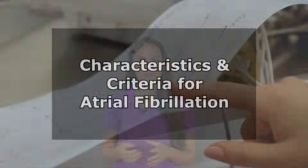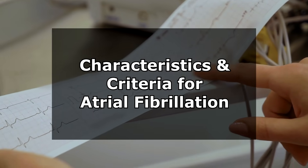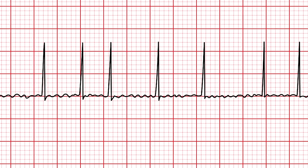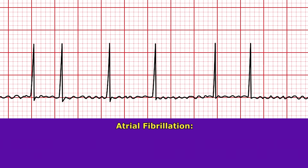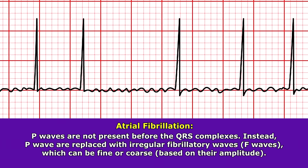How can you tell that your patient is in AFib? Let's look at the criteria and characteristics for this rhythm. When you look at the ECG waveform, you're going to see that P waves are not present before the QRS complexes. Instead, the P waves are replaced with these irregular fibrillatory waves, which we call F waves, and they can be described as either fine or coarse, depending on their amplitude.